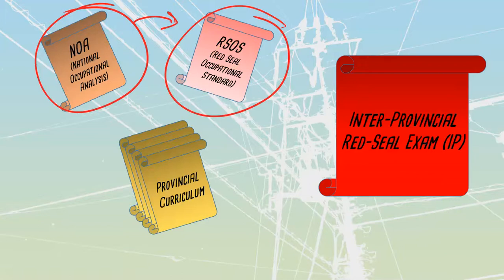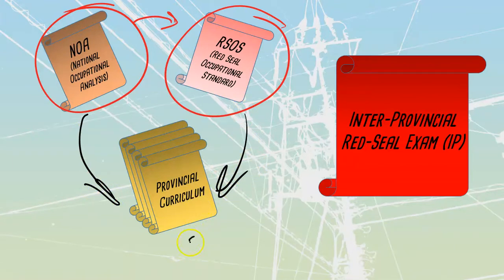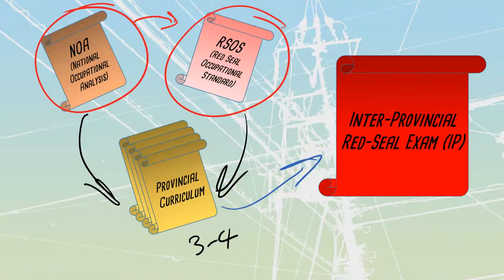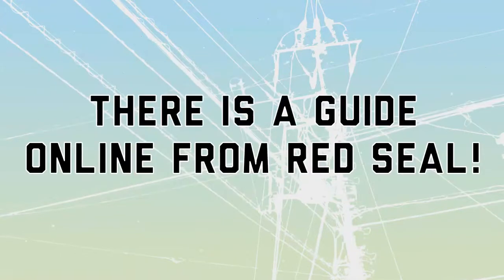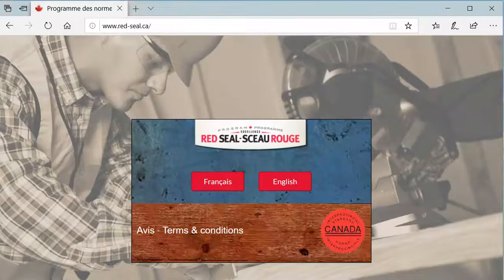Out of the RSOS and the NOA, each of the provinces uses those to develop their provincial curriculum — anywhere from three to four levels of training. At the end of that provincial curriculum, or maybe if you're coming in just as a challenge, you are then going to write the Red Seal Interprovincial Examination, which is the IP exam. The IP exam is developed directly off of the RSOS and the NOA, so all of these documents play a huge part in the development of that exam. There is a guide online from Red Seal that tells us exactly what's going to be on this exam, so we're going to jump over there right now.